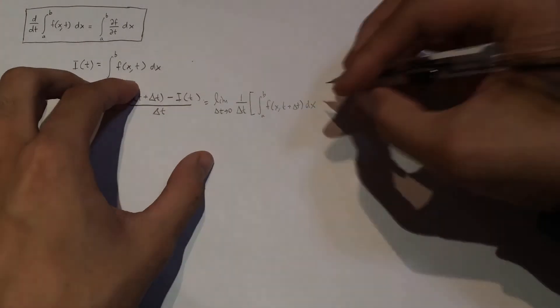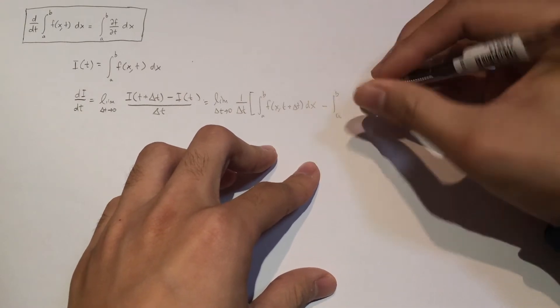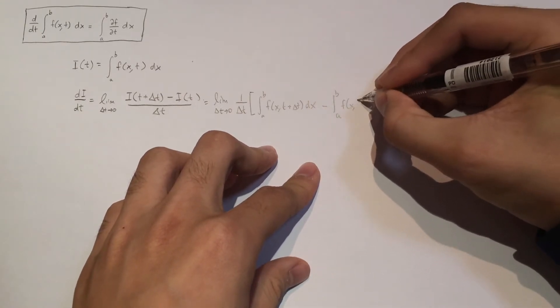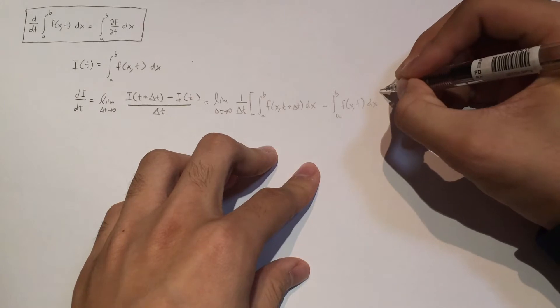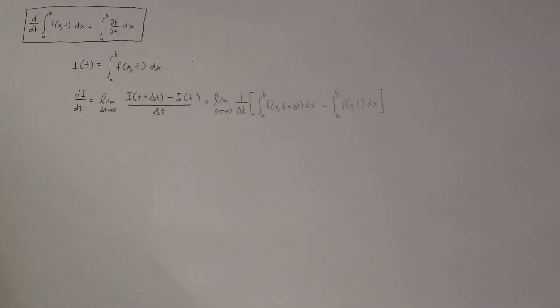And it's minus I of T. So it's just minus that. So it's minus of A, B, F, X of T, DX, like that.